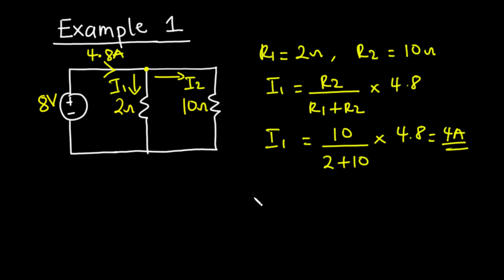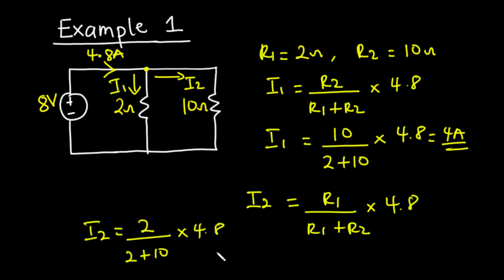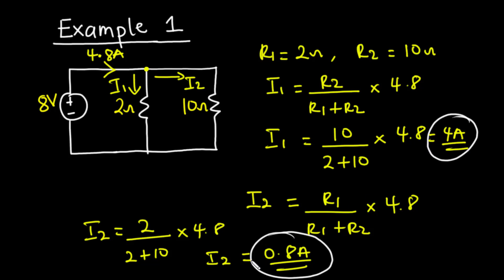To find I2, we use I2 = (R1 / (R1 + R2)) × I_total. So I2 = (2 / (2 + 10)) × 4.8, which gives us I2 = 0.8 amperes. These are the values of current flowing through R1 and R2 respectively.